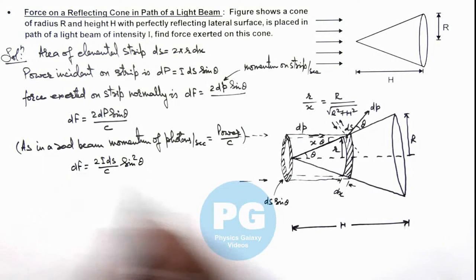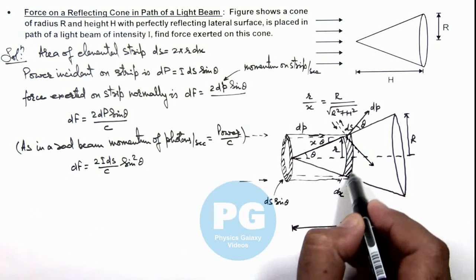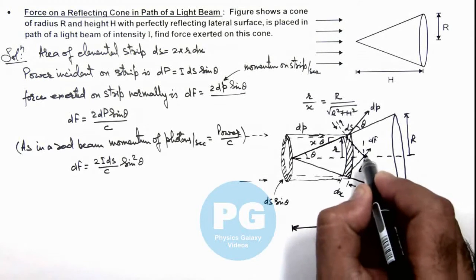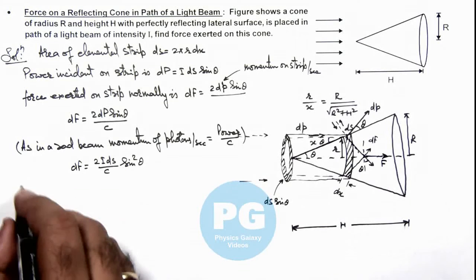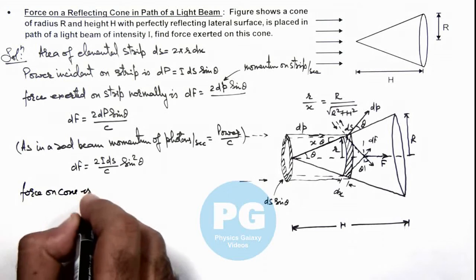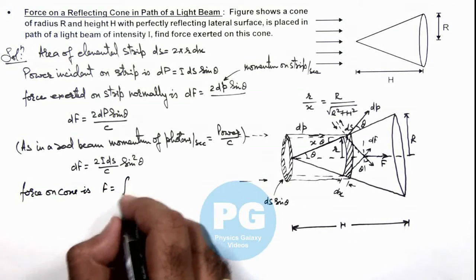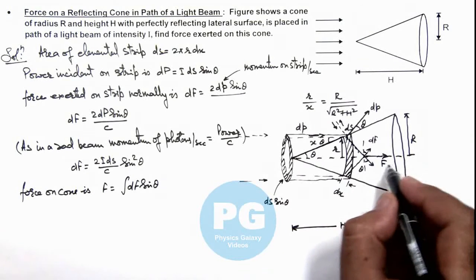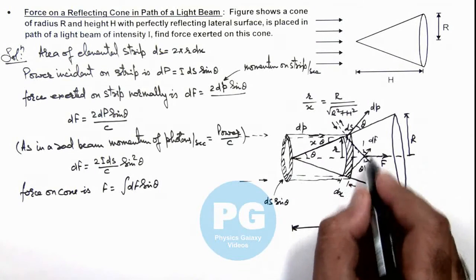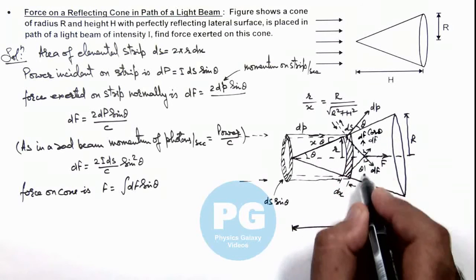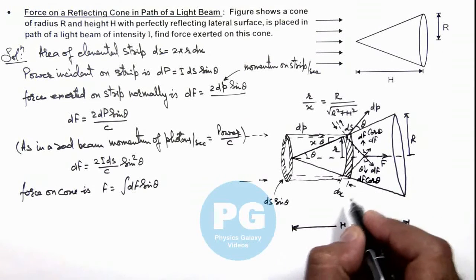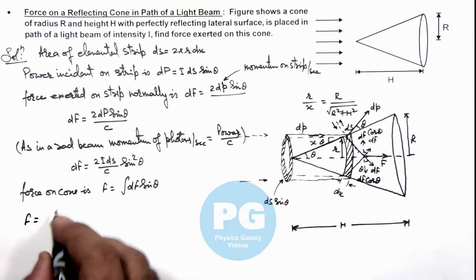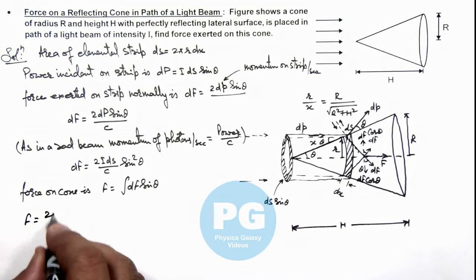This force dF = 2I·dS·sin²θ / c would be acting on this strip in the normal direction. Similarly it will be acting on all strips. The force on the cone is the integration of dF·sinθ, because the normal components dF·cosθ will get cancelled out. Only dF·sinθ will be added up. On substituting, the value is 2I/c.